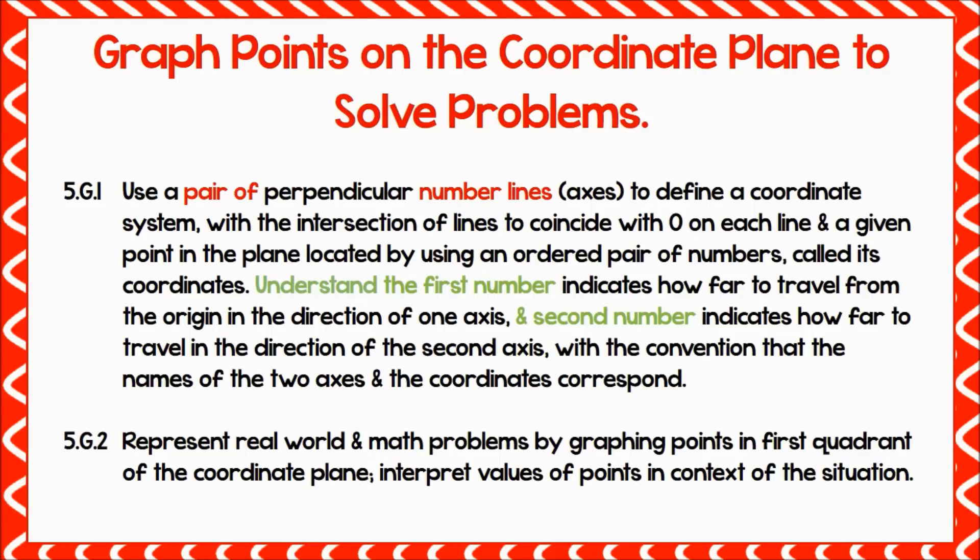Standard G1 appears to be very lengthy. However, this standard simply states that students should recognize that a coordinate grid is really just a set of number lines meeting at the zero point, and students should understand what the first and second number of an ordered pair represent. Standard G2 asks students to apply the information from G1 to solve problems on the coordinate grid.